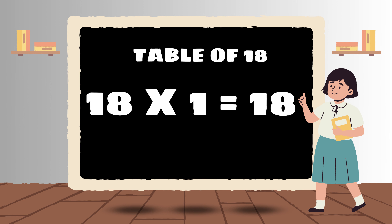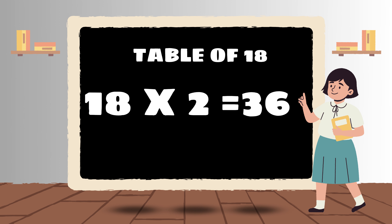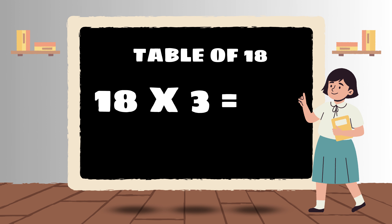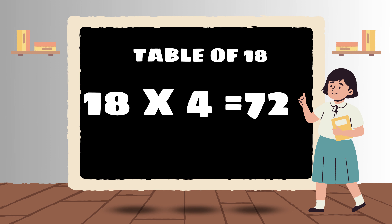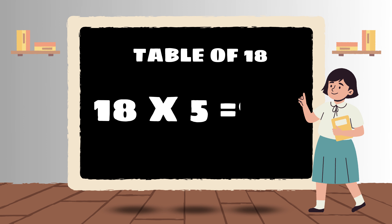18 times 1 is 18. 18 times 2 is 36. 18 times 3 is 54. 18 times 4 is 72. 18 times 5 is 90.